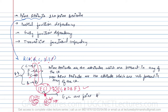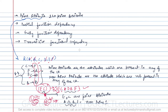Since EC is the only candidate key, E and C are the prime attributes. All other attributes — A, D, B, and F — are non-prime attributes, meaning they are not present in any candidate key of this relation.